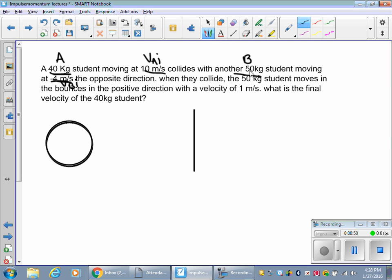When they collide, the 50 kg student, so this is B, moves and bounces in the positive direction, so he's going the opposite way. The velocity of positive 1 meter per second, so this is velocity B final. What is the final velocity of the 40 kg A? So we're looking for the velocity A final.